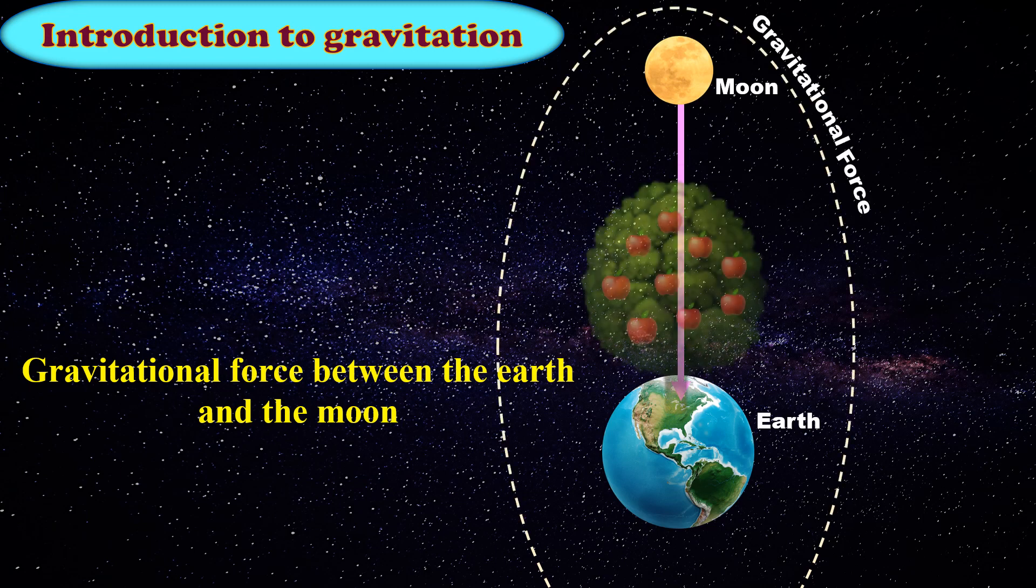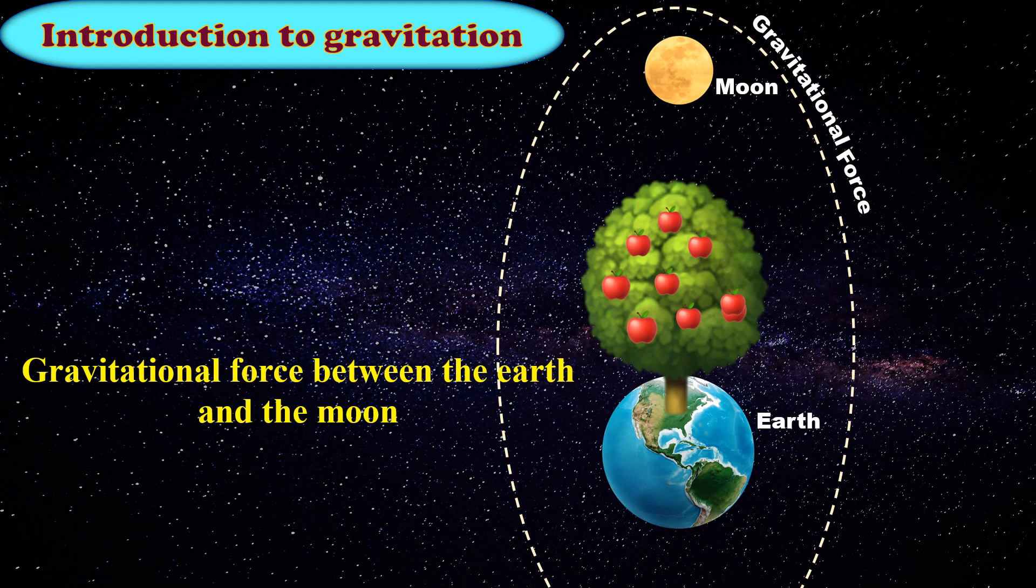Now, here is an apple tree on the Earth. An apple from the tree falls towards the ground in the vertical direction. Thus, the force on an apple from the tree is towards the center of the Earth.